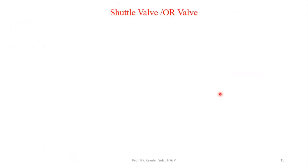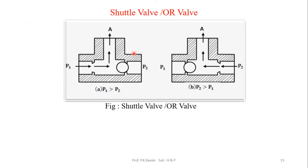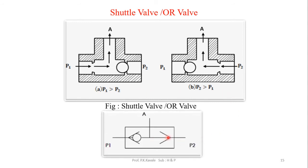The shuttle valve: the valve body has two inputs, P1 and P2, and one output, A. The restrictor is a ball type. If input P1 is present, output is given. If P2 is present, output is given. If both are present, the ball remains at the center and flow goes from P1 to A and P2 to A. It is also known as the OR valve.